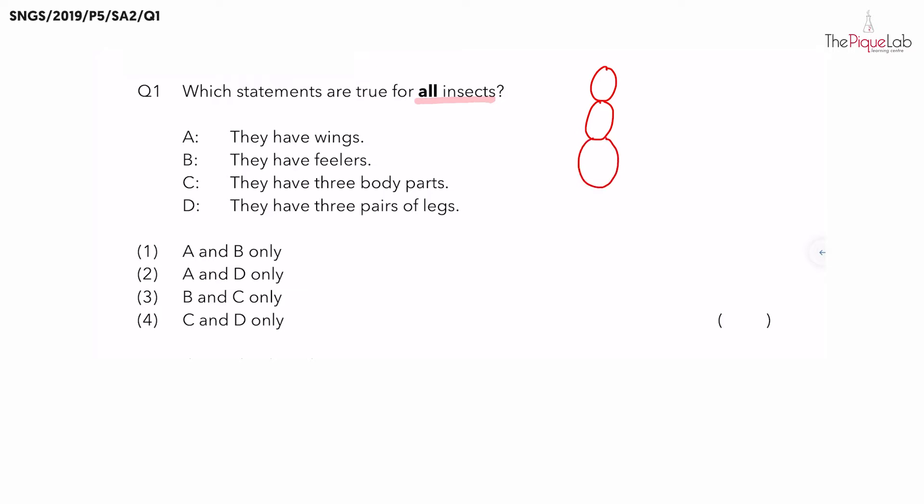What about number of legs? They have three pairs of legs, so I'm going to draw six legs on this insect here. Now something is missing on the head. They have antenna, or you can call them feelers.